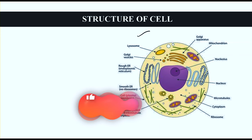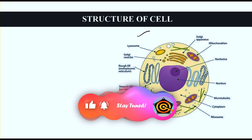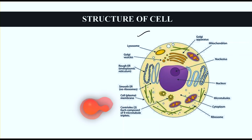Cells have different shapes, sizes, and also different types of functions depending upon their structure. Mainly there are three major functional regions in the cell. The first is the cell membrane.